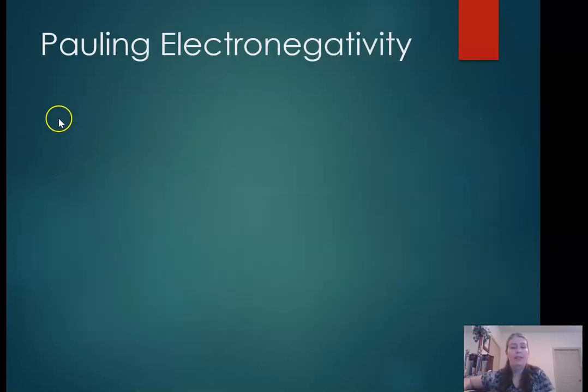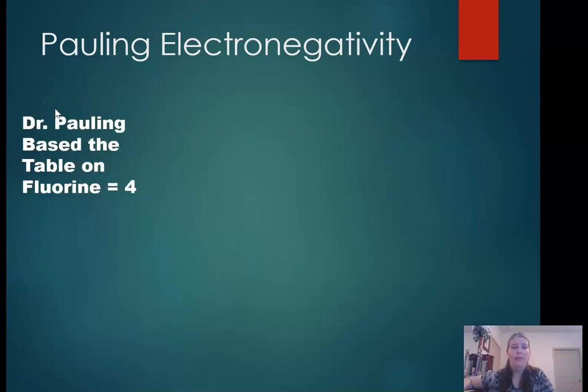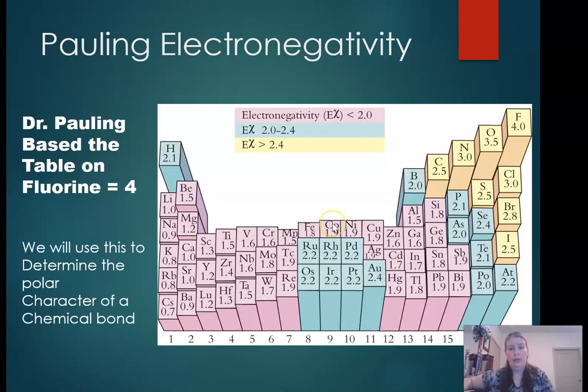Another periodic trend is Pauling electronegativity. Linus Pauling comes up with this and bases all these values off of fluorine. Fluorine is basically four and it's the highest number, so everything is related to a fraction of four. Electronegativity has to do with what's going on when an atom is in a molecule. How much does it pull on that shared pair of electrons in a bond? The higher the electronegativity, the more it pulls that shared pair towards itself, to the point where if the electronegativity difference is very large, we actually end up with ions over a covalent bond.